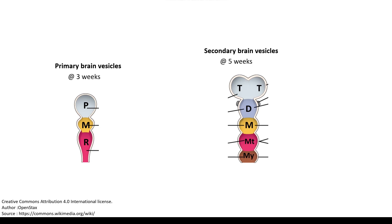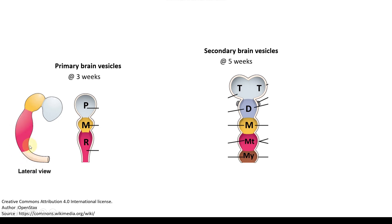We have already completed this part but we need to see it in more than two-dimensional diagrams — we have to see this in a 3D perspective. In a lateral view the three-vesicle stage is like this. What you see here is the spinal cord on the caudal aspect. From the spinal cord the brain bends on itself ventrally, corresponding to the cranial fold. This is called the cervical flexure.